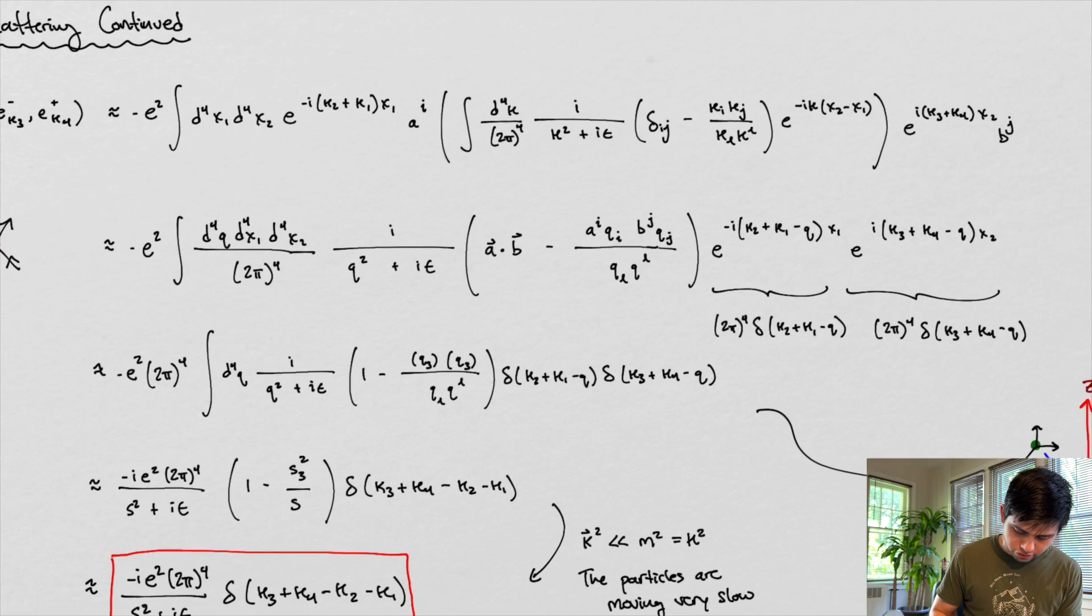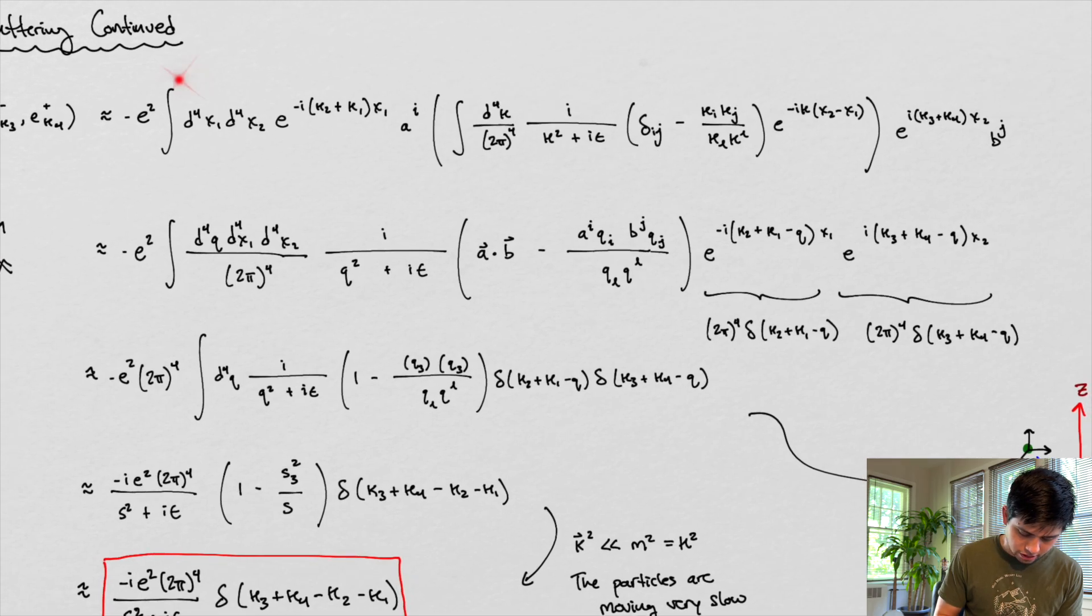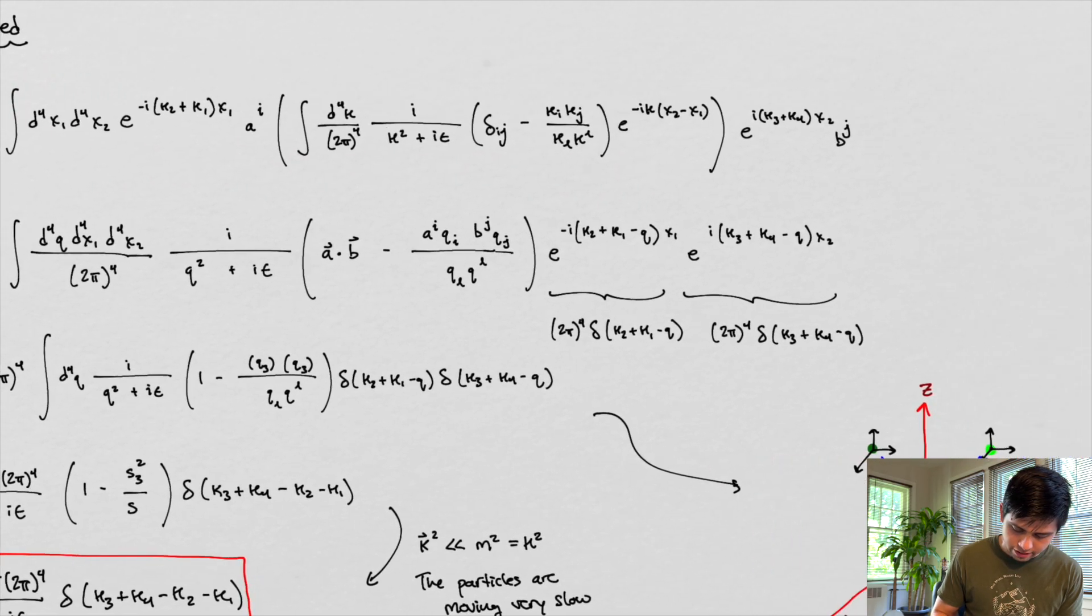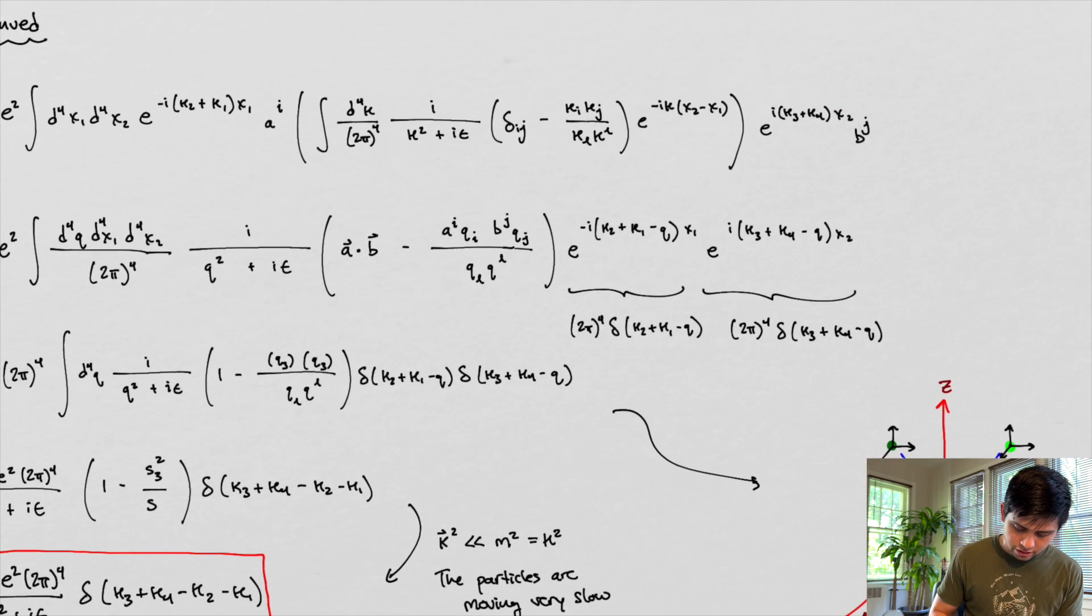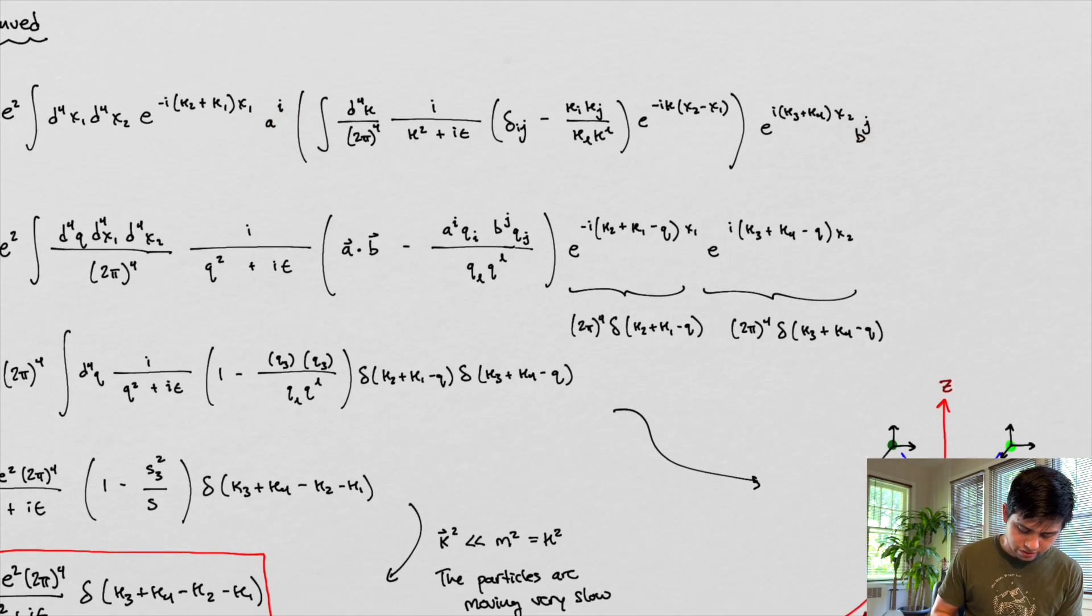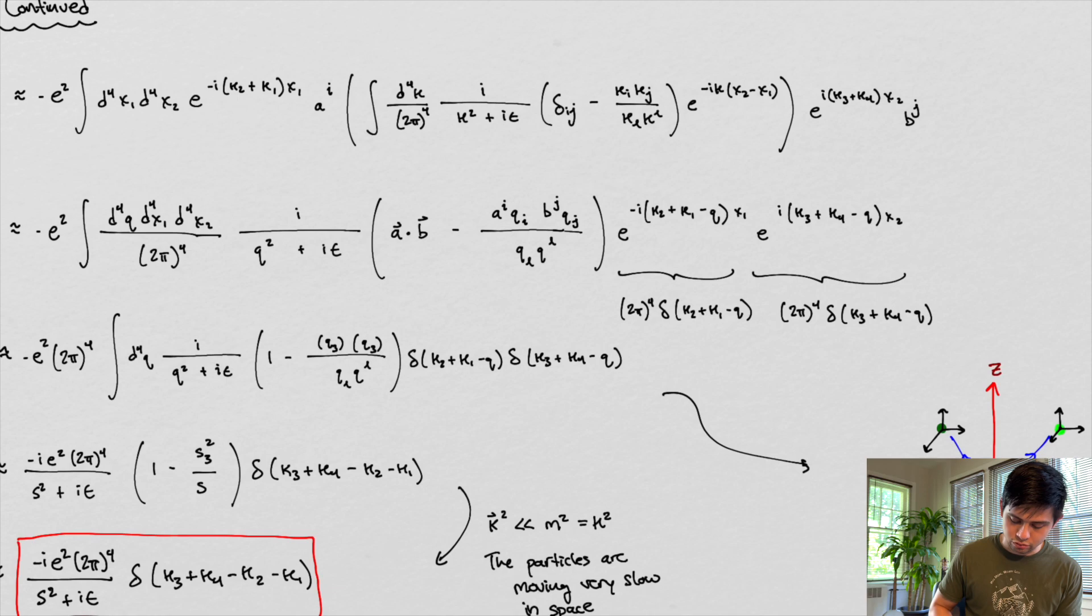So we ended up at a point where we had this big, long guy right here. And we had this AIs and BJs. And we said that the AIs and BJs were bookkeeping tools for spin. We also established this relationship here, and these two relationships here, in the last part of our video, in our last video.